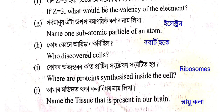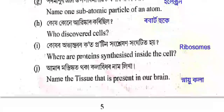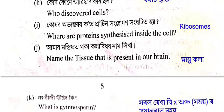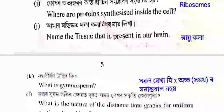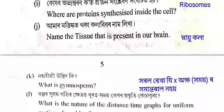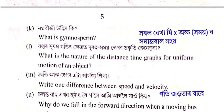Kukh kun habiskar kurishil — who discovered the cell? The answer is Robert Hooke. Kukhar aibhantoran-ar kut protein hongshlekhon honghatita haay? Where are proteins synthesized inside the cell? The answer is ribosomes. Amar mastiskot ka kolabidhar naam likhha — name the tissue present in our brain. The answer is snayu kolha (nervous tissue).